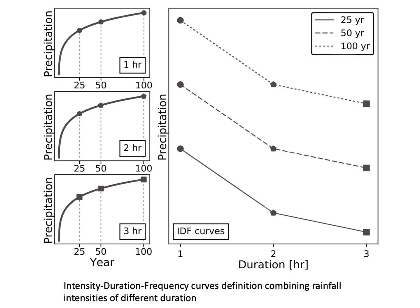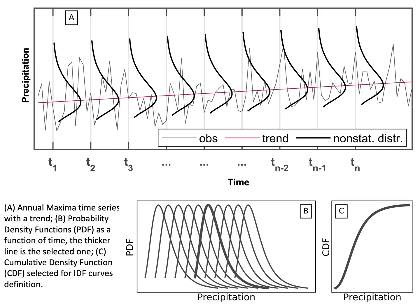If we have a trend in precipitation, it means the distribution of precipitation changes or shifts over time. In a stationary approach, we have one distribution with fixed parameters, but if statistics of extremes change over time, it means we may need parameters that evolve over time or in response to a physically-based driver.